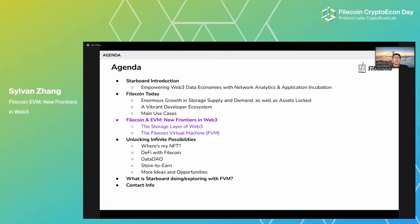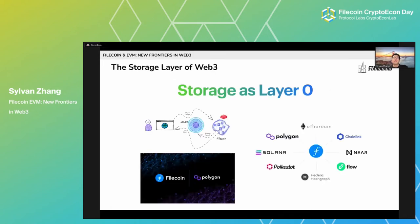However, we think that this is just the beginning. When smart contract programmability is combined with provable storage on Filecoin, there is a lot of value and potential to be unlocked. Think of the storage and retrieval capabilities on Filecoin as the layer zero — it's already a super valuable stack for Web3, but it's insufficient for developers who want to build more complex applications through programmable smart contracts.